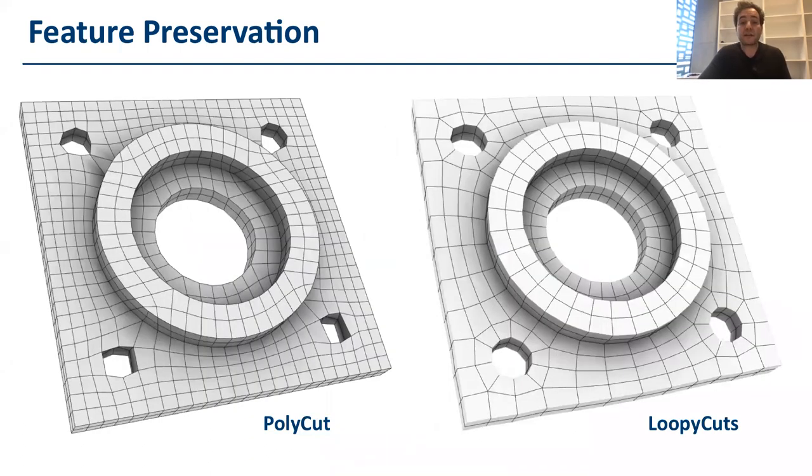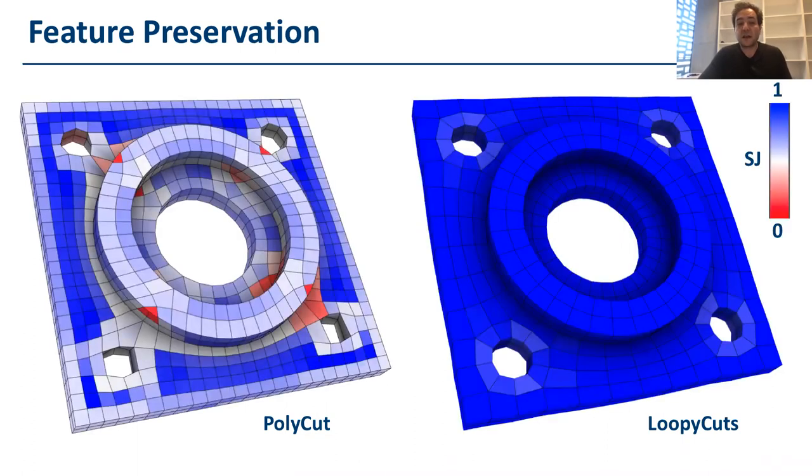Here we compare our method with the polycube methods, and as you can see, our method can successfully align all the elements along the circular feature on the center of this mechanical object, while polycube has to represent it as a square. So it has to insert some singularities in all these holes. And because it actually fails to align to the feature lines precisely, also the quality of the elements is significantly lower than the one produced by our algorithm.